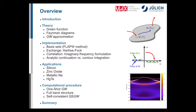Regarding implementation, we use the LAPW method — the same as in the FLEUR code — as our basis set. We also need another basis set called the mixed product basis. To evaluate the GW self-energy, we divide it into two parts: the exchange part, which corresponds to Hartree-Fock, and a correlation part for which we use an imaginary frequency formulation. There are two ways of evaluating the self-energy: analytic continuation (the default in SPEX) and the more accurate contour integration method.